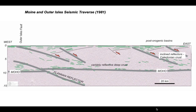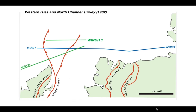The really big surprise was the Flannan reflector — this event in the mantle. It was the first hint that the mantle itself could have reflective structure. This mantle structure became one of the key things to try and resolve. Following on from MOIST, the next part of the BIRPS program was the Western Isles and North Channel survey, designed to go down the western side of the British Isles and through the North Channel between Ireland and Scotland. With the discovery of the Flannan event, an extra line — the Winch 1 line — was added, running parallel to the MOIST profile in the vicinity of the Flannan reflector.